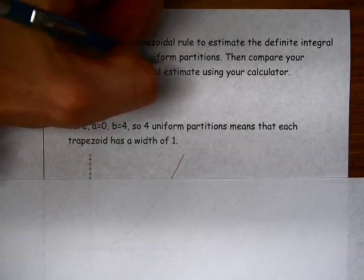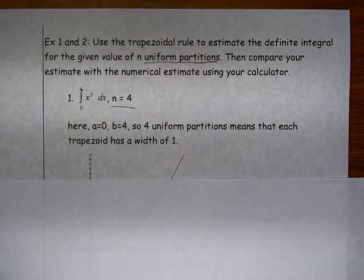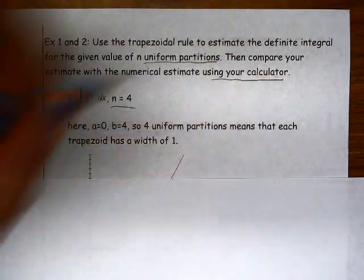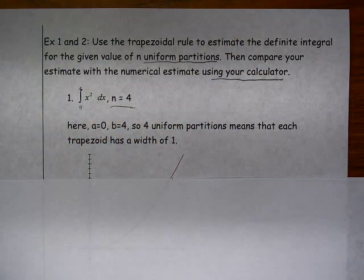We're going to talk about how to do that trapezoidal approximation with uniform partitions, and then we're going to compare our estimate with the numerical estimate using our calculator. So we're going to talk about how to use a calculator to estimate the definite integral of a given function.